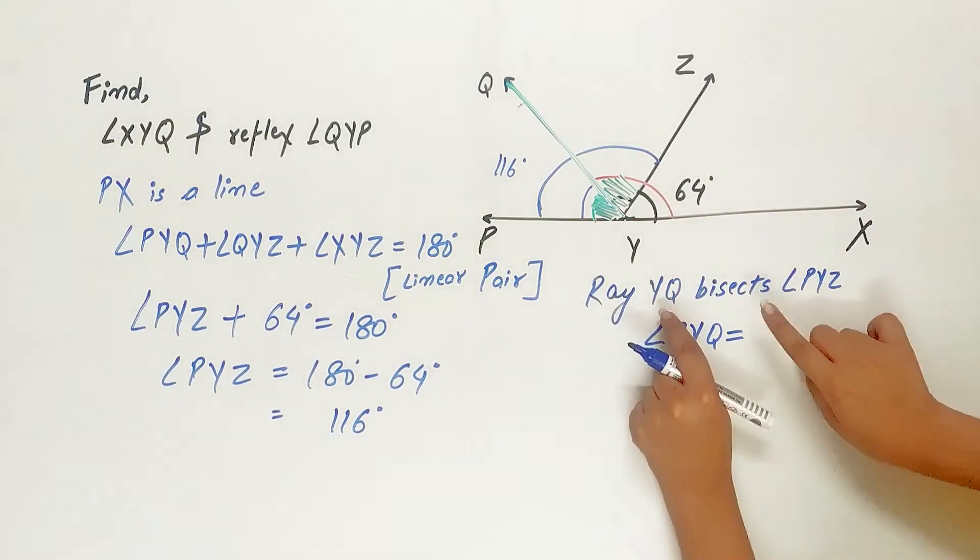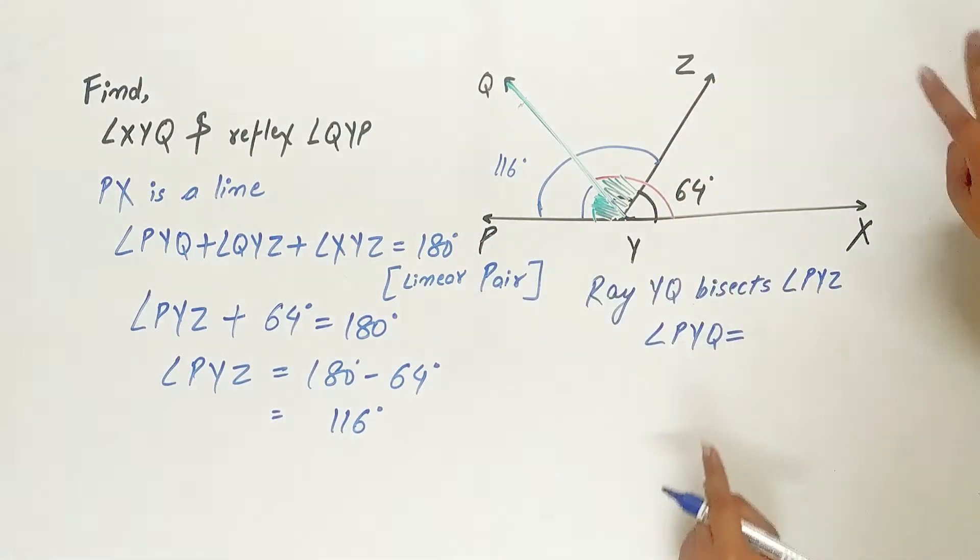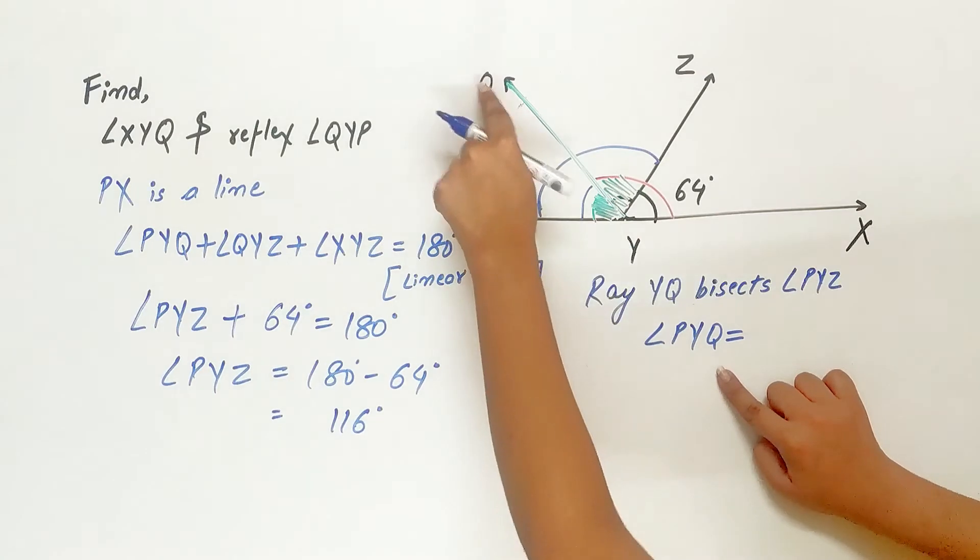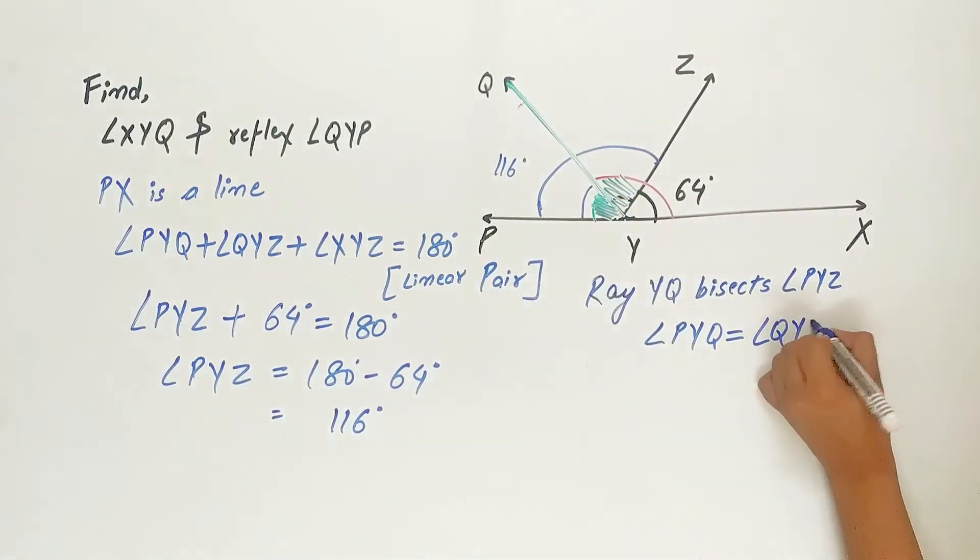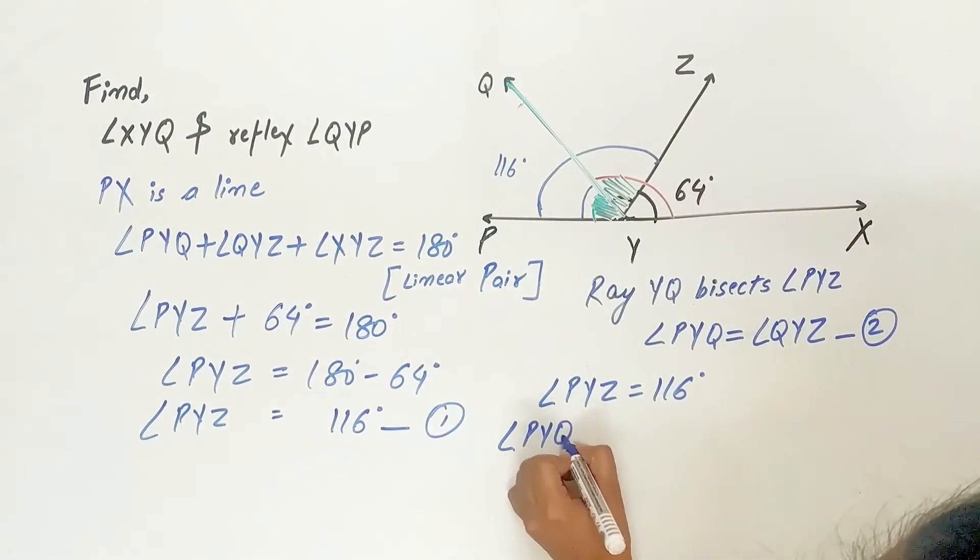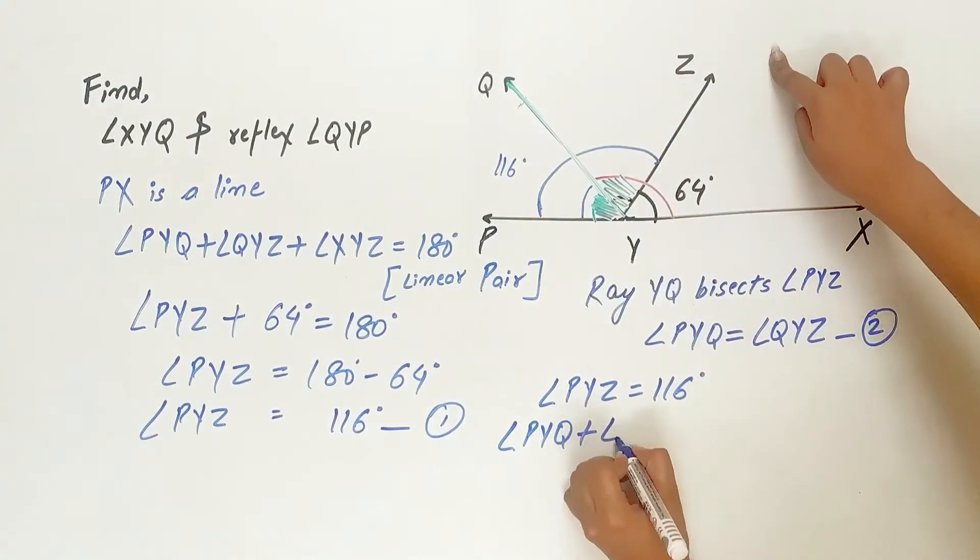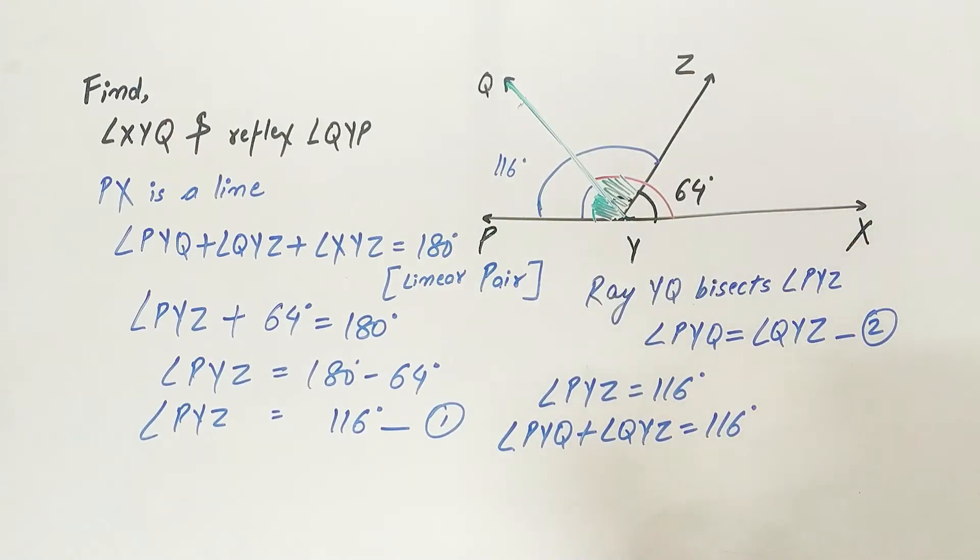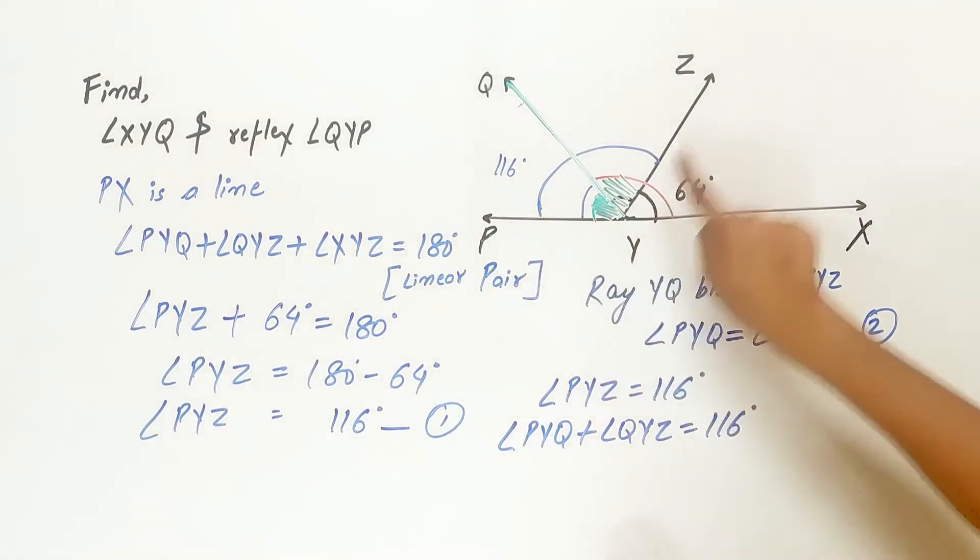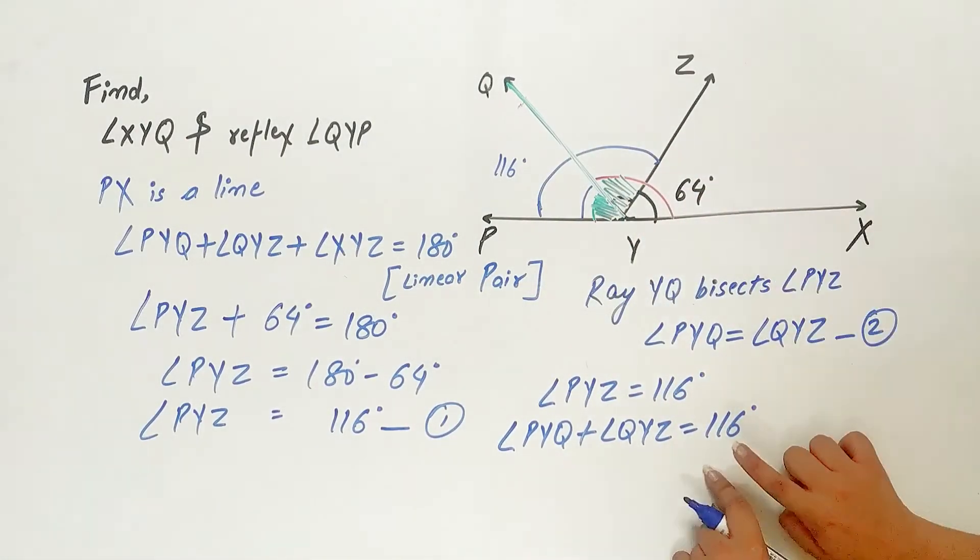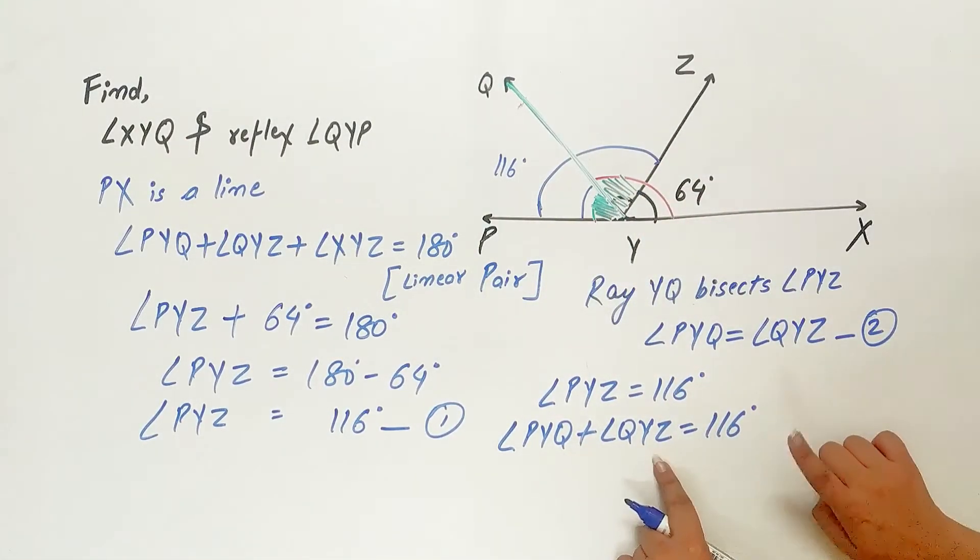So ray YQ divides angle PYZ into two equal parts. Hence PYQ is equal to angle QYZ. So can I write angle PYZ as angle PYQ plus angle QYZ which is equal to 116?